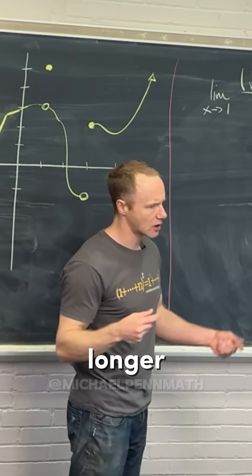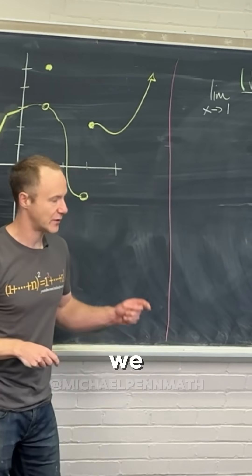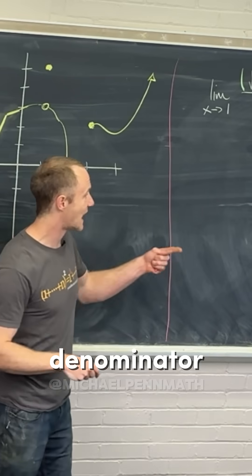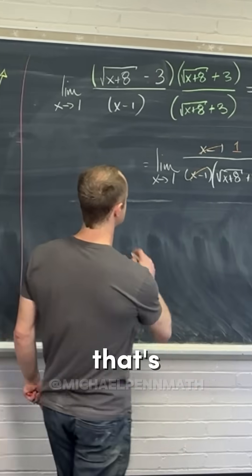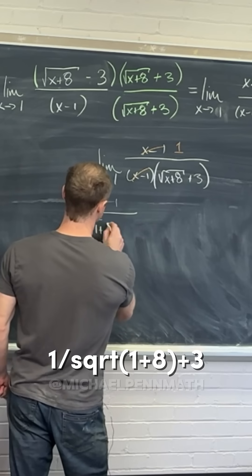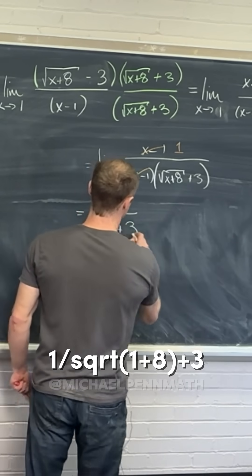Now it's no longer one of these bad forms. If we plug in x equals 1, the numerator is just 1 and we can calculate the denominator. That's going to give us 1 over the square root of 1 plus 8 plus 3.